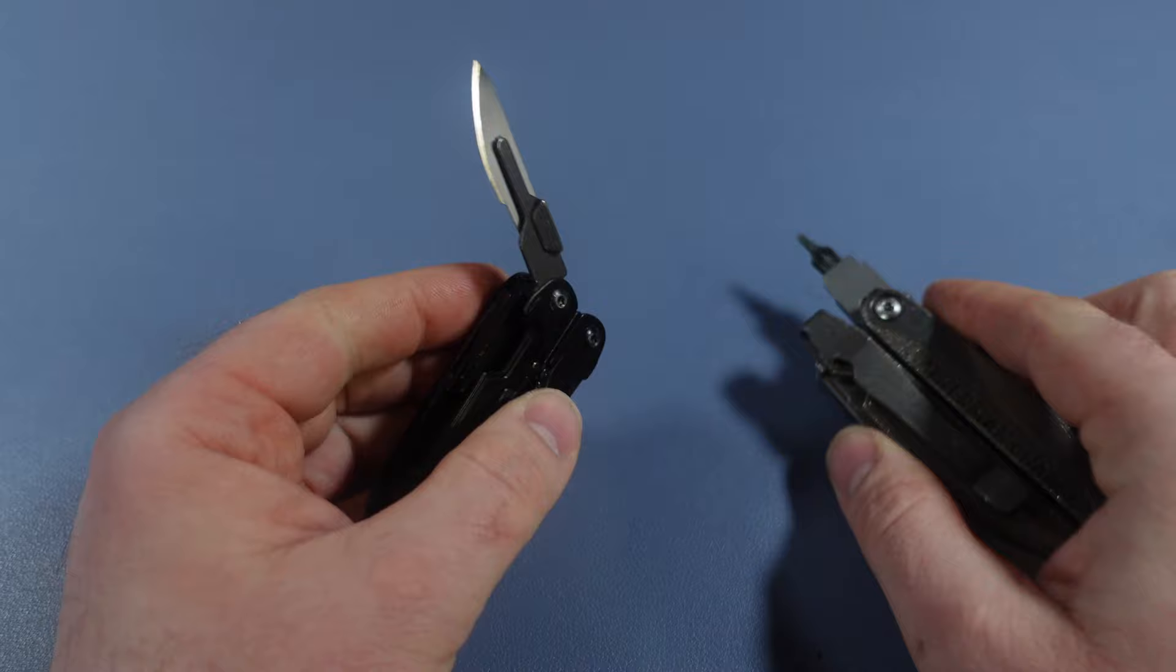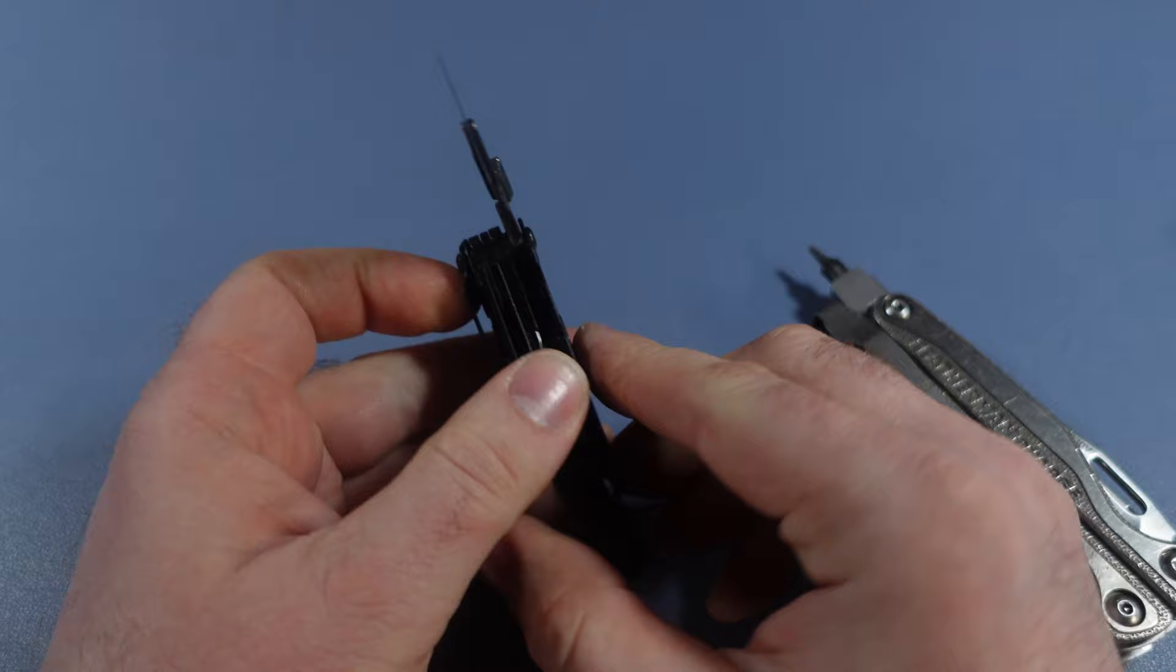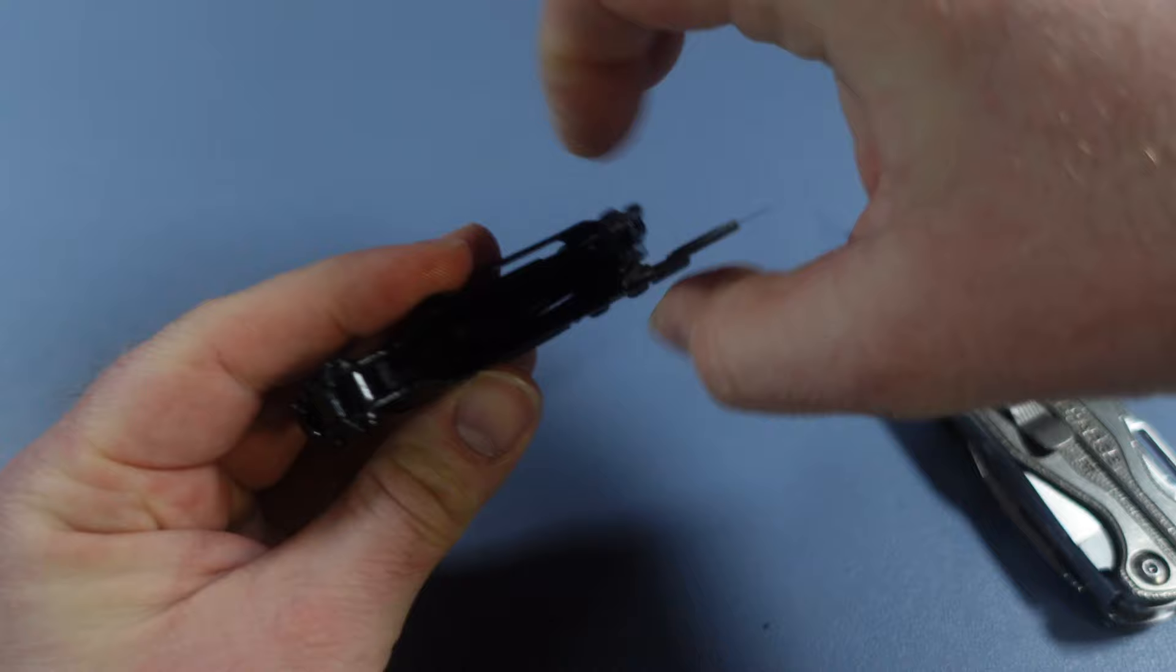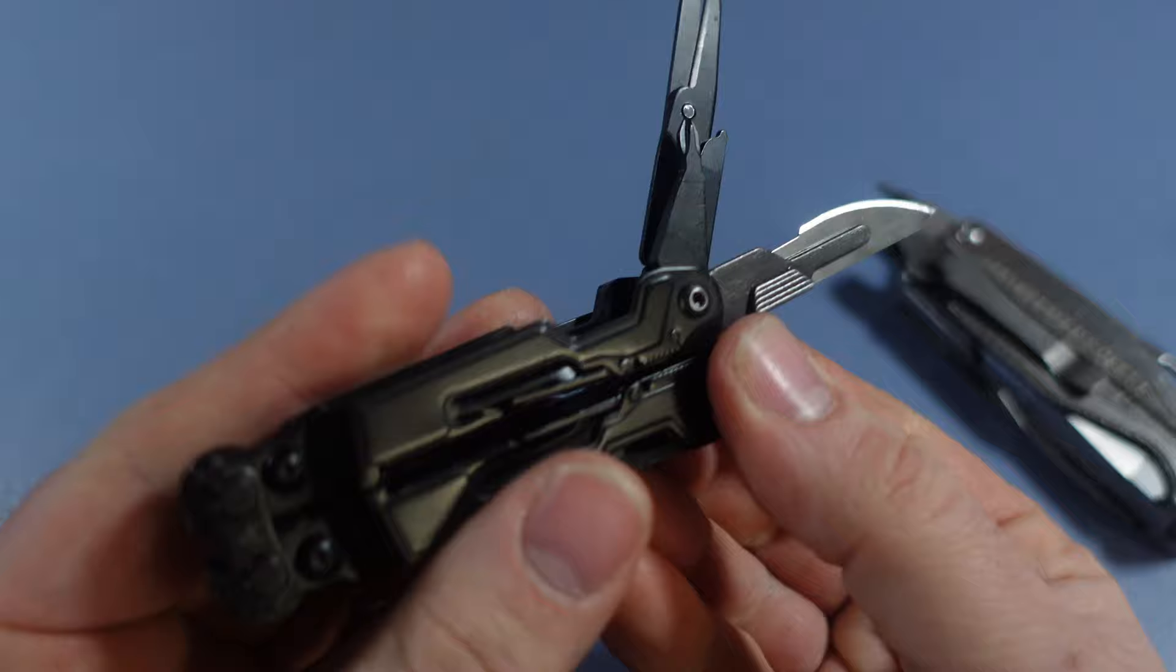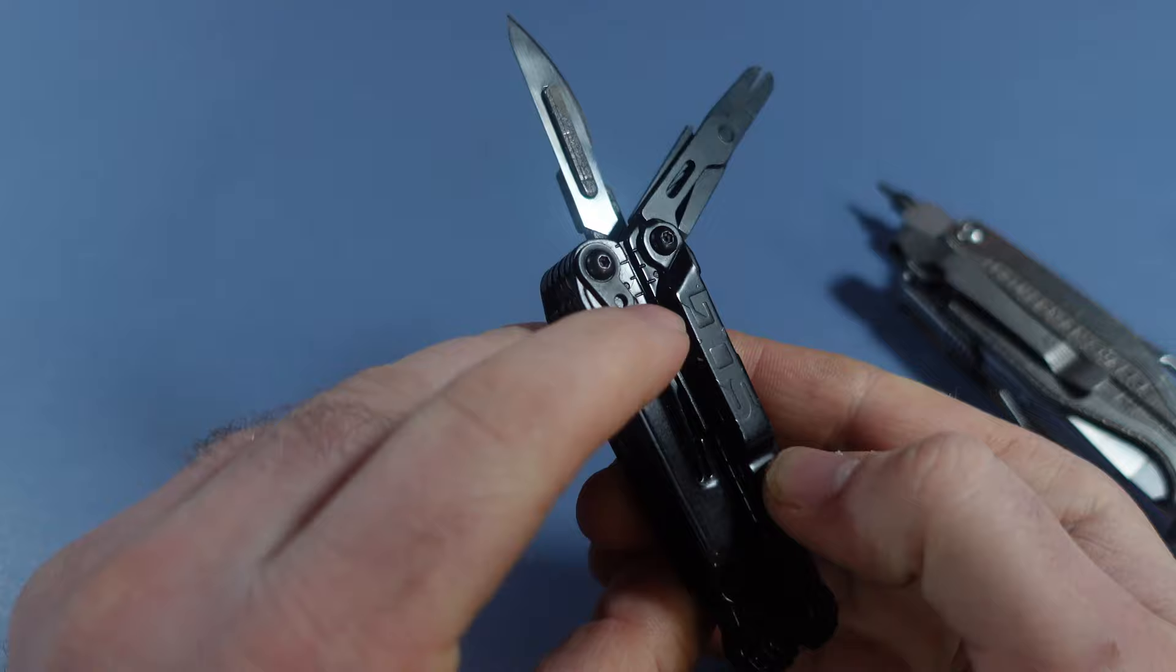And what you will need is you'll need T8 Torx screwdrivers, one for each side, to hold these in place. And then you simply undo the screw. You tap out the other part of this right here. And then these tools will all come out. And then unfortunately, the solid PowerPint is not the easiest tool to mod.